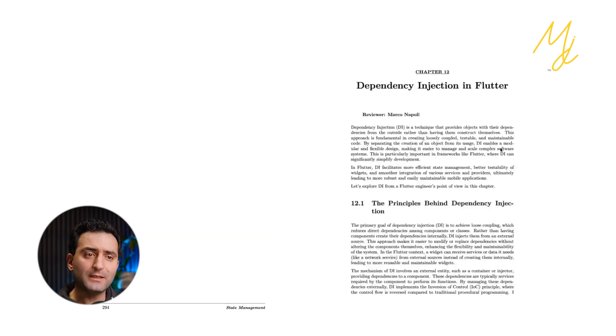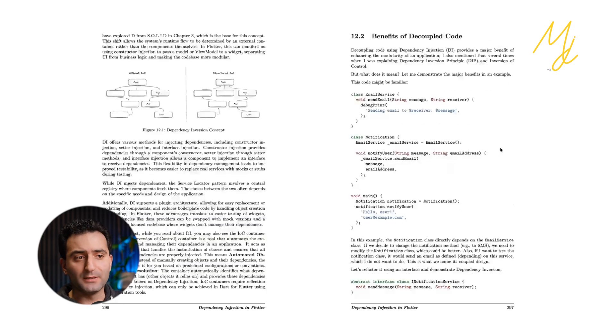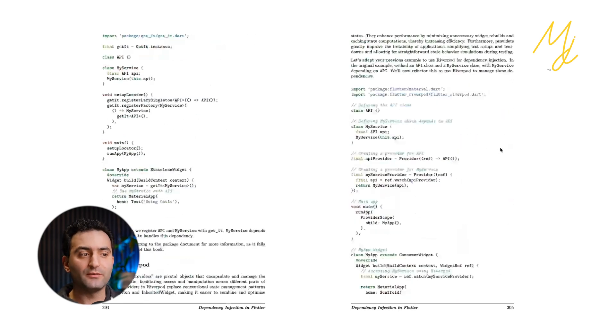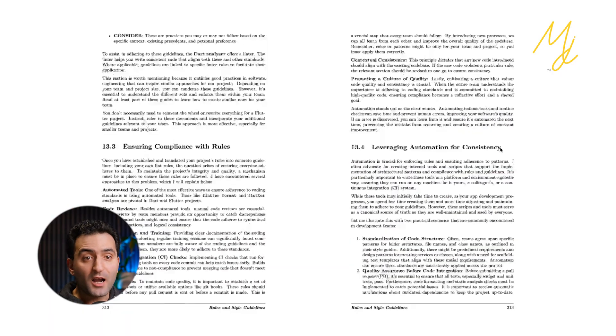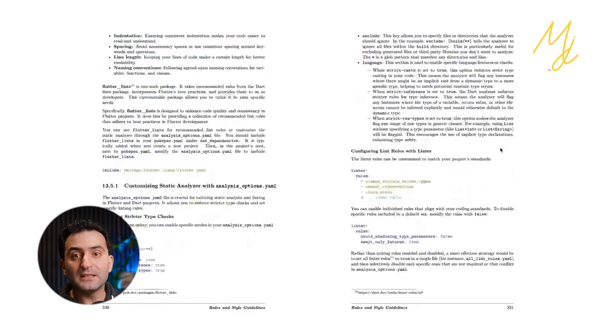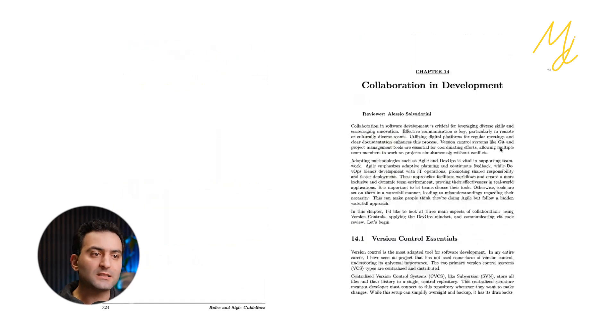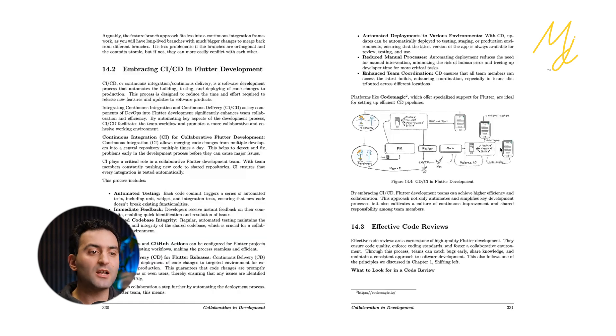Chapter 12 covers dependency injection — what it is in general and how to leverage this concept in Flutter applications. Part three of the book is mostly about processes: rules, style guides, how to write lints and custom lints, and collaboration in development including different version control approaches and effective code review guidelines.